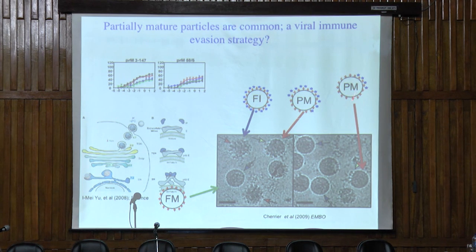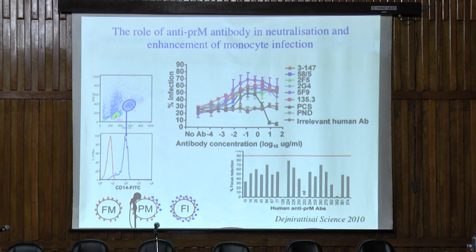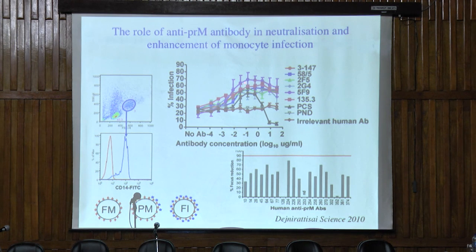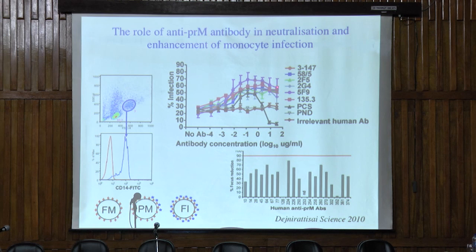Looking at this with primary human cells: here are some monocytes being infected with dengue virus. They can be infected without any antibody present. As you add anti-pre-M antibodies, even to very high concentrations of many micrograms per ml, all you get is more and more infection of these cells. So these anti-pre-M antibodies are completely useless at neutralizing infection and indeed drive higher virus replication.